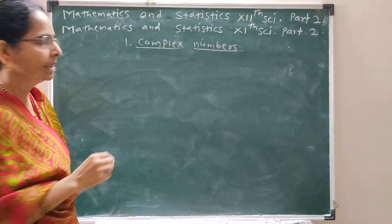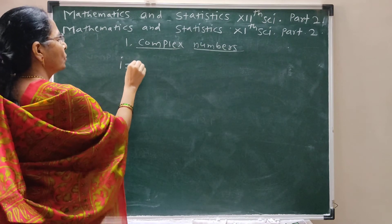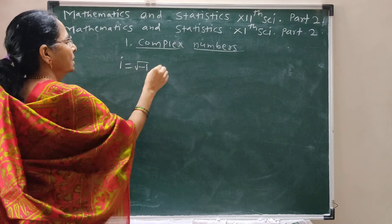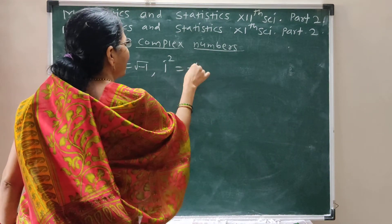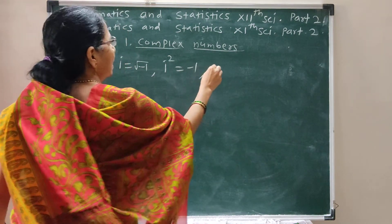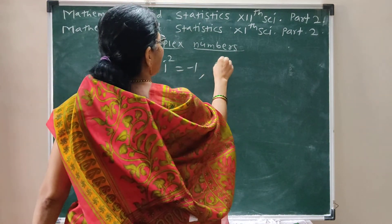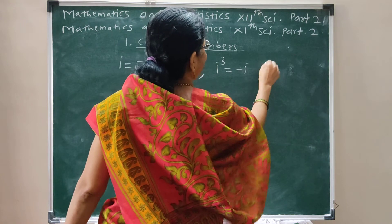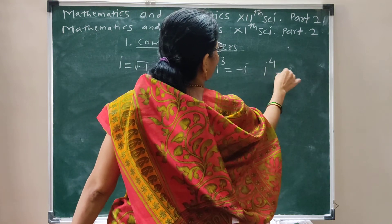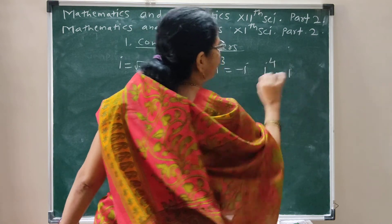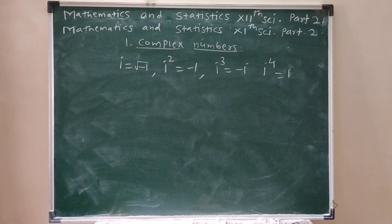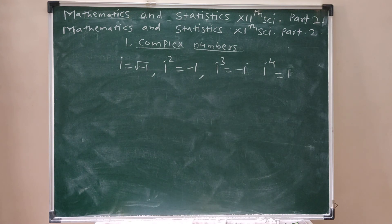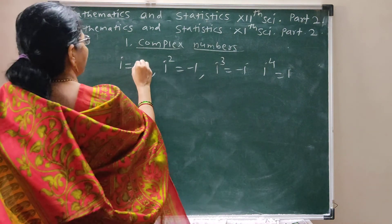Today we discussed: i is root of minus 1, i squared is minus 1, i cubed is minus i, i raised to 4 is 1. Remember all these values.